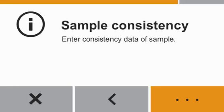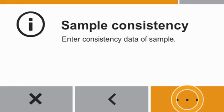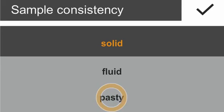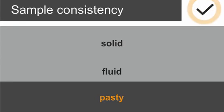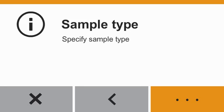Now, please enter the sample consistency. Ketchup has a pasty consistency. At the last step, select the type of sample: organic or inorganic.